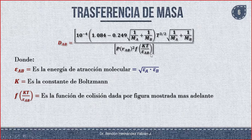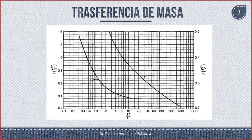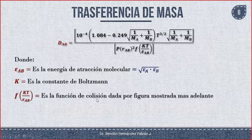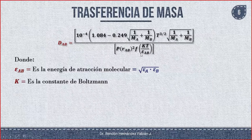Este valor de KT/ε que se obtiene aquí, se coloca en la gráfica. En tablas se puede encontrar el valor de KT entre épsilon. Trazamos líneas: por ejemplo, si obtenemos un valor de 6, llegamos a la curva y tomamos el valor hacia la izquierda. Ese valor es el que colocaríamos en la ecuación. Tenemos también una tablita del Treibald, o esta otra expresión; es la misma gráfica con los mismos valores.